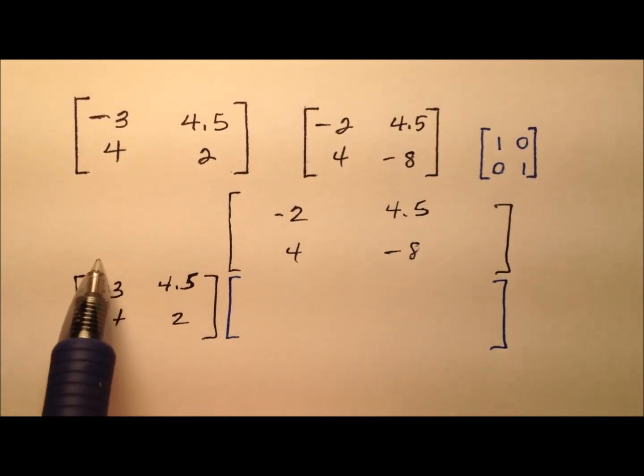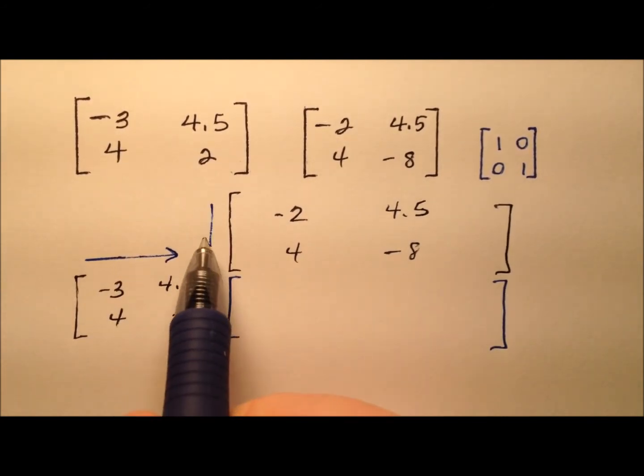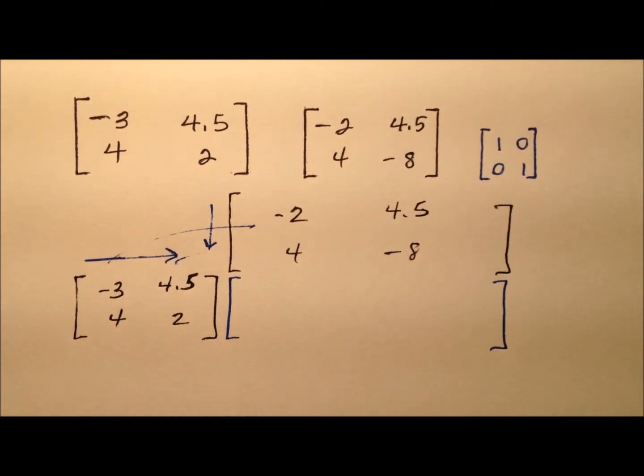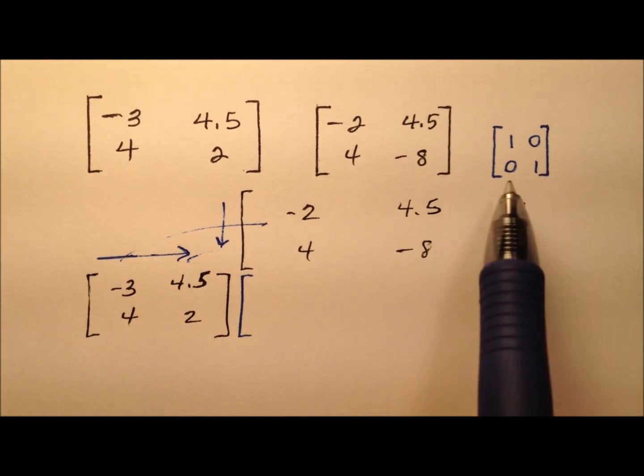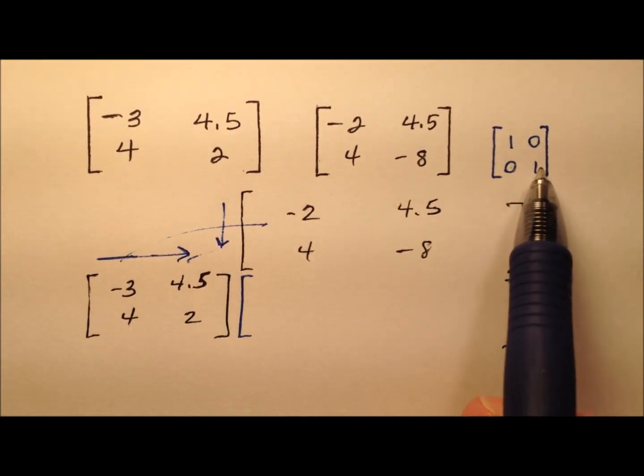So for multiplication, remember we're working across the rows and down the columns and we're going to have some multiplications to do and then we're going to add up all those products. So we need it to look like 1, 0, 0, 1.